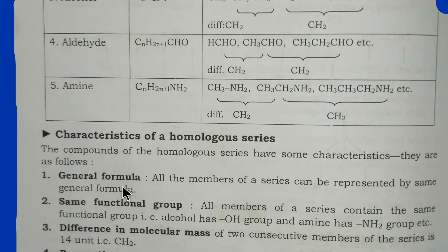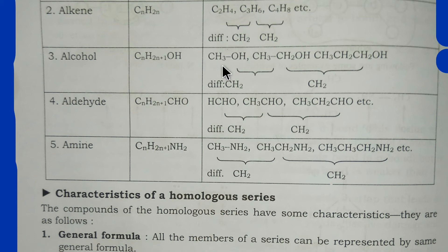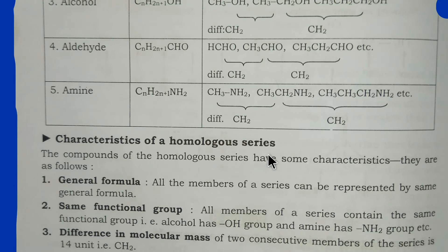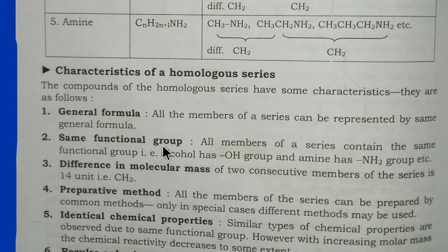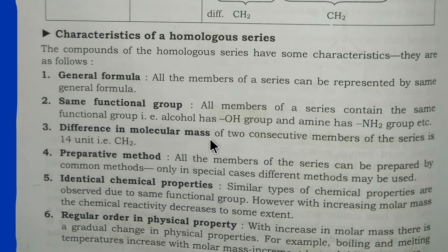All members of a series contain the same functional group. For example, all aldehydes share the same functional group, all alcohols have the hydroxyl (-OH) group, and all amines have the amino (-NH₂) group. The difference in molecular mass between two consecutive members of the series is 14 units — that is CH₂, where carbon has mass 12 and two hydrogens have mass 2, totaling 14.